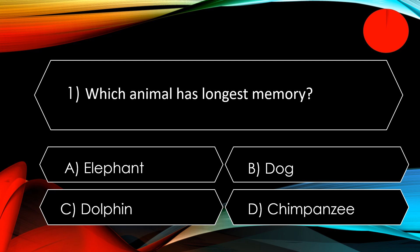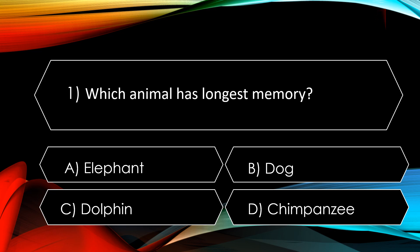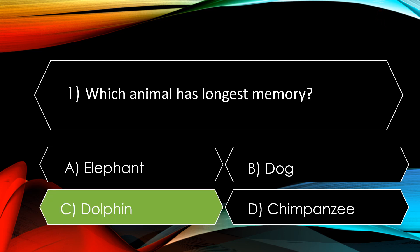We'll start with the first question: which animal has the longest memory? Options are A. Elephant, B. Dog, C. Dolphin, and D. Chimpanzee. The correct option is C. Dolphin — dolphins can remember things for up to 20 years.